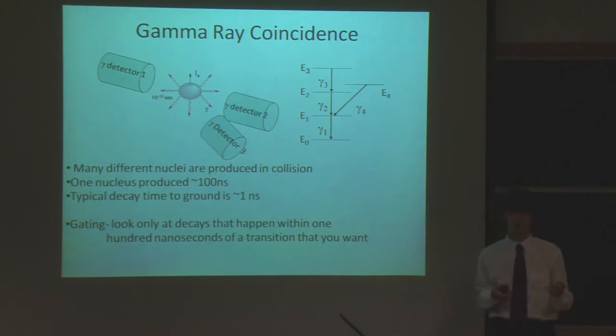This process creates many different nuclei, and there's one produced about every 100 nanoseconds, and the typical decay time is one nanosecond. So how are we going to tell the gamma rays that we measure at each of these different detectors at different angles? How are we going to tell if they're from Selenium-71 or if they're from another nucleus?